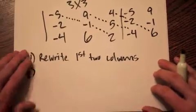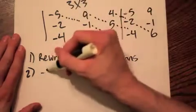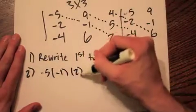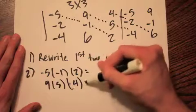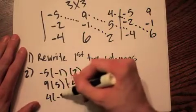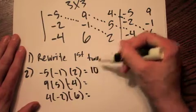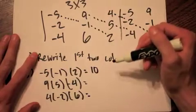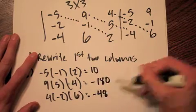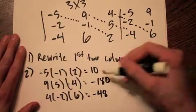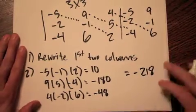What we're going to do is take each element of each diagonal and multiply them together. So this first diagonal is going to be negative 5 times negative 1 times 2. The next diagonal is going to be 9 times 5 times negative 4. And the last diagonal is going to be 4 times negative 2 times 6. You're going to get three numbers. Your first number is going to be 10, because negative 5 times negative 1 is positive 5, times 2 gives us 10. This one's going to give us negative 180, and this one is going to give us negative 48.